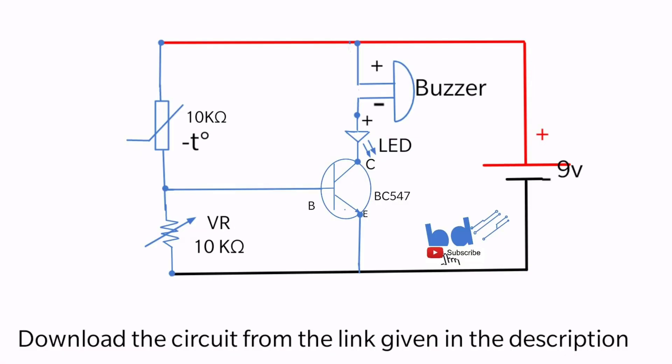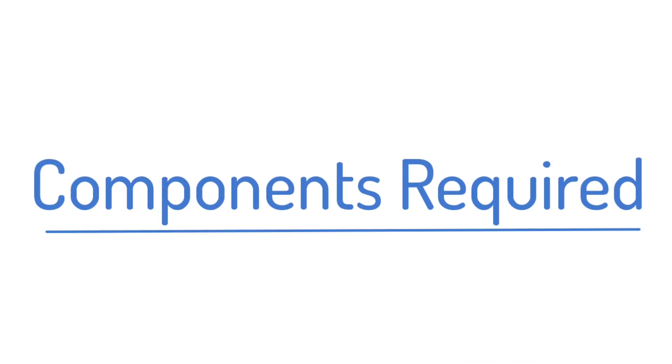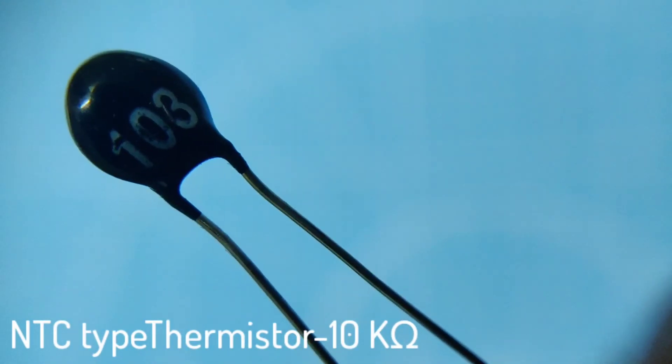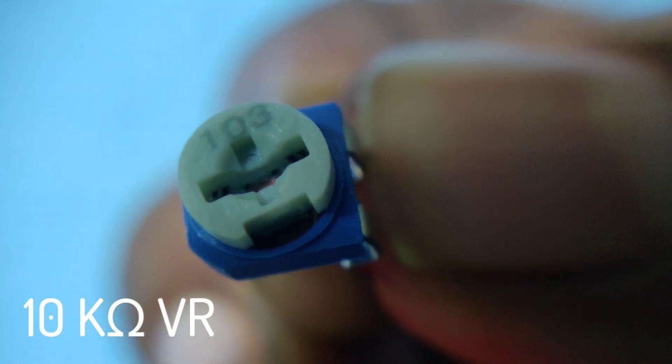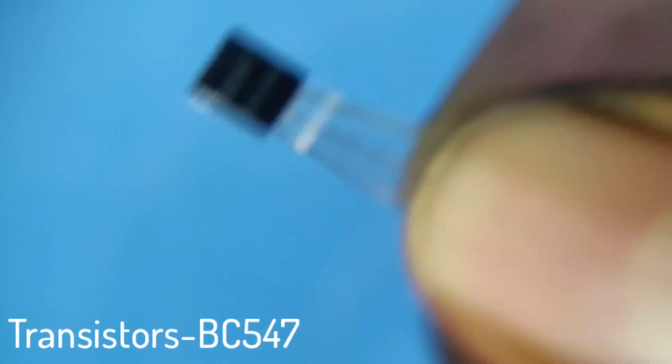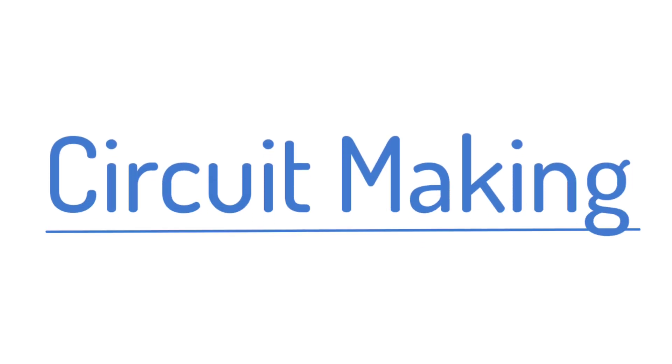You can download this circuit from the link given in the description. The components required are 10 kOhm NTC thermistor, 1 LED of any color, 1 buzzer, 10 kOhm variable resistor, and 1 transistor of BC547.